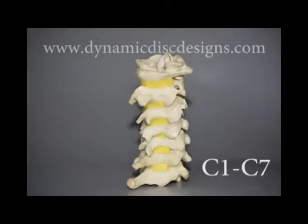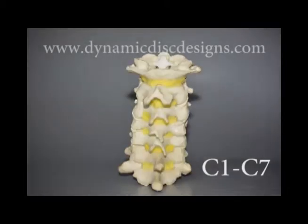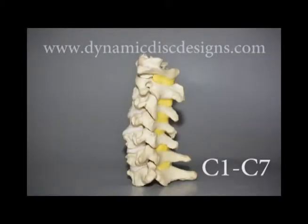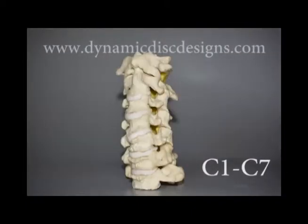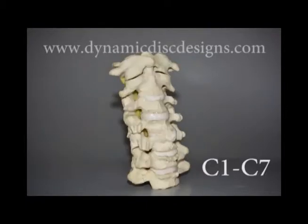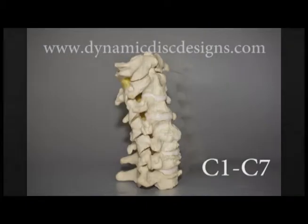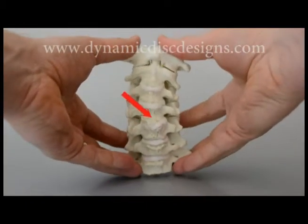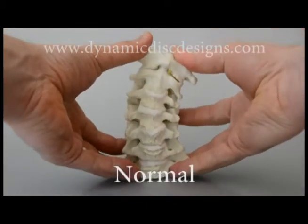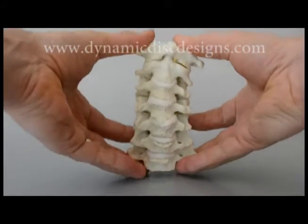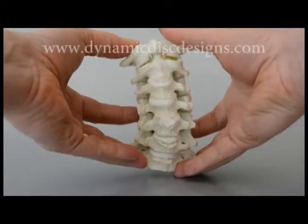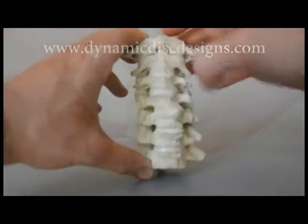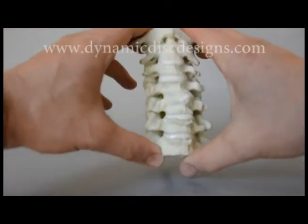Dynamic Disc Designs introduces a multi-level C1 through C7 cervical hypermobility model. Designed with degenerated bones, a reconstruction of the intervertebral discs, ligamentum flava, and at C1, C2, the cruciform ligament.